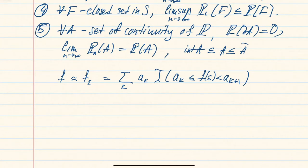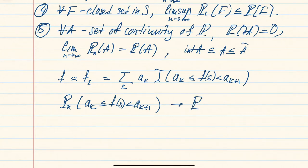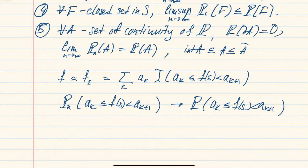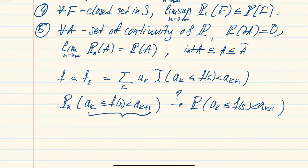The integral of the indicator is just the probability of that set. If the probability of each set converges to the limiting probability, then the integrals converge, and for any epsilon this implies convergence of integrals for the original function. To get convergence for each set, choose the values a_k so that each set is a set of continuity, allowing us to apply condition five.